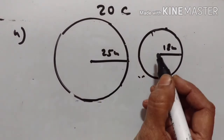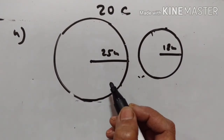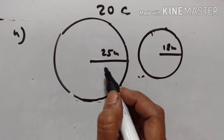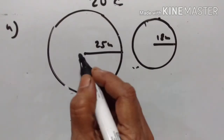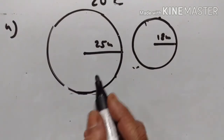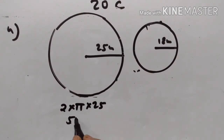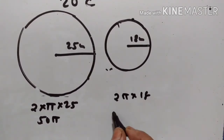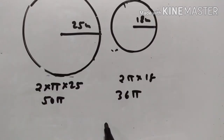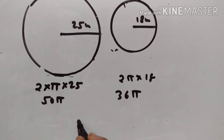Fourth problem. The radii of two circles are 25 cm and 18 cm. Find the radius of the circle whose circumference equals the sum of the circumferences of these two circles. The circumference of the first circle is 2π × 25 = 50π, and the second is 2π × 18 = 36π. The sum of the two circumferences is 86π.